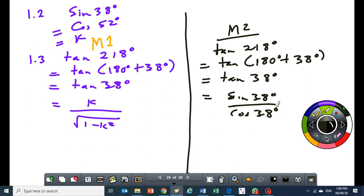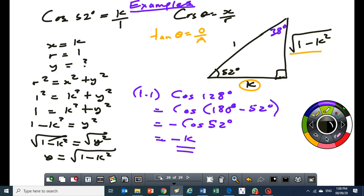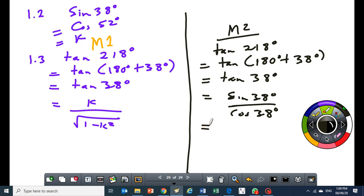I know that my sine 38 is equal to K from 1.2. So, if I go back to my diagram, if my reference angle is this one and this is my opposite side, that's my adjacent, that's the hypotenuse. Cosine theta is equal to adjacent over hypotenuse. The hypotenuse is 1. The adjacent side is square root of 1 minus K squared. So, this becomes K divided by the square root of 1 minus K squared, which is the same thing.